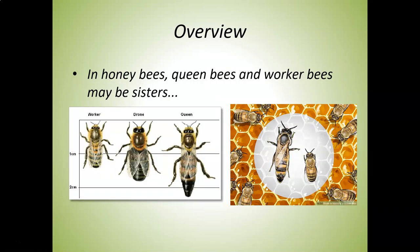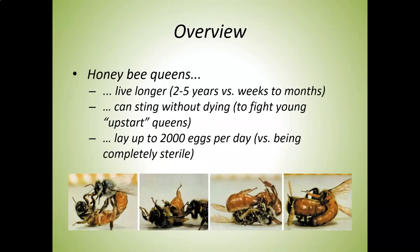Now we have situations where things can be genetically identical but look very different. This is an example of bees — honeybees and queen bees. They are genetically identical, so they have the same DNA, the same genes. They're sort of clones of each other, except that obviously they look really different. They have much different behavior and much different physiology.